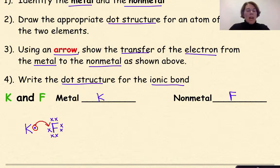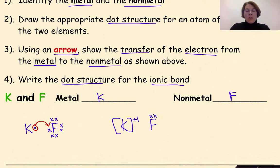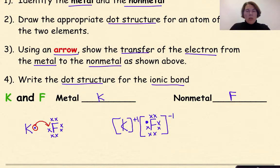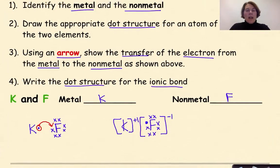I'm going to circle the valence electron from the potassium and show it donating to the fluorine atom. As a result, I can now write the dot structure for the ionic bond. I write K with brackets and plus one, because it lost that one valence electron. I write fluorine with its original seven valence electrons, plus the electron coming from potassium represented differently to show where it came from. We now have a fluoride ion, so I put brackets around that with a minus-one charge. This shows the electrostatic force of attraction between the potassium ion and the fluoride ion — the ionic bond.